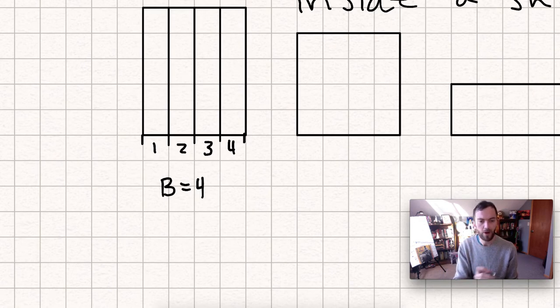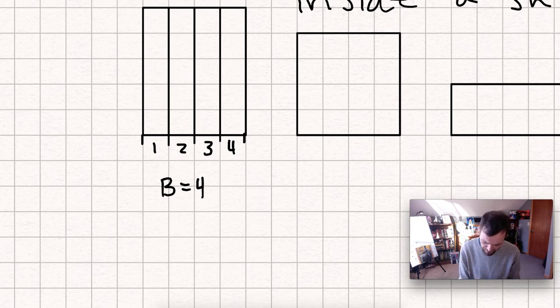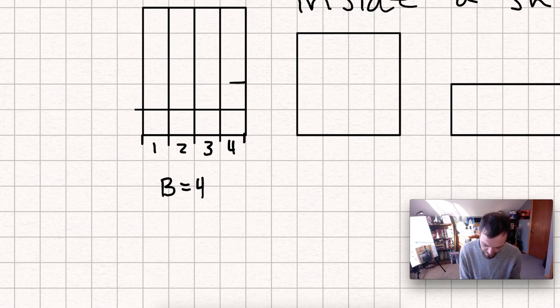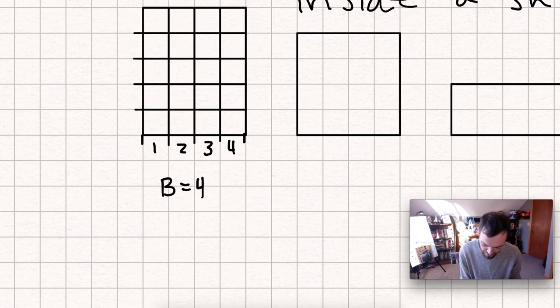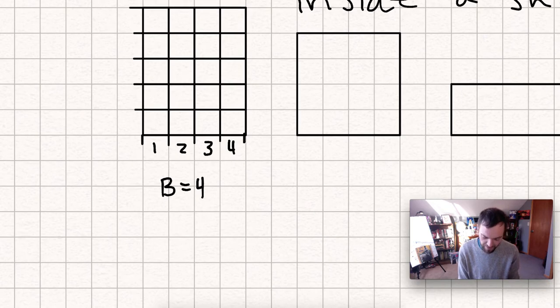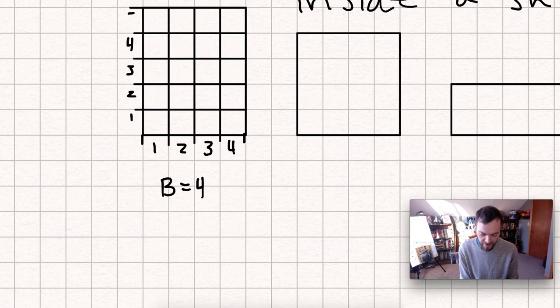All right. So I know that there are four across, and I can also find how high it is, right? How tall this shape is. I can count one, two, a little bit longer just to be able to measure it a bit easier. Two, three, four, five. One, two, three, four, five. So the height is five.